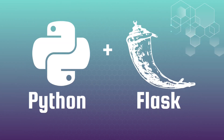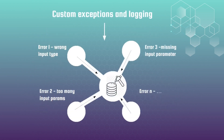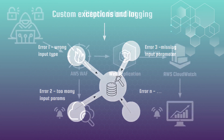We will start by creating a very small API application. For that purpose, I will use the Python programming language and the Flask framework. If you are not aware of these technologies, don't worry — the application will be extremely simple, so anyone can understand how it works. While creating the application, I will concentrate on two essential aspects: custom exceptions and logging. I will explain why it is essential to have both in any application and how to implement them properly from a security defense perspective.